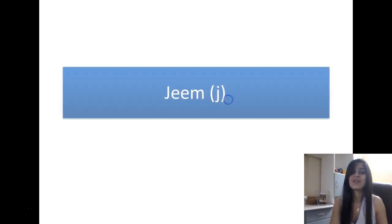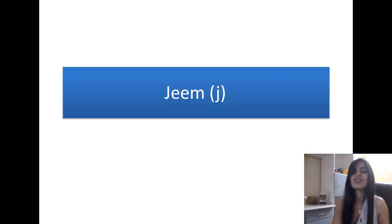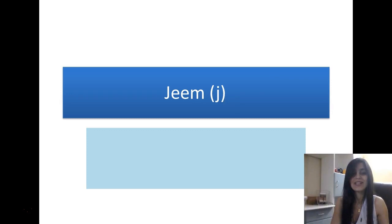Then we have the letter G. It is just like a J in English, so it is J. The pronunciation is J. And the shape of G is like this.